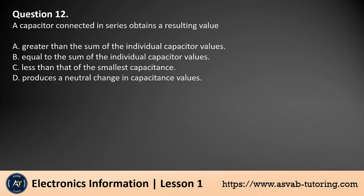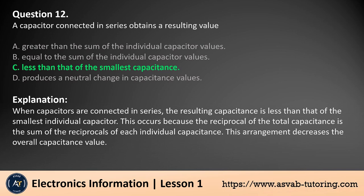Question 12. A capacitor connected in series obtains a resulting value: a. Greater than the sum of the individual capacitor values, b. Equal to the sum of the individual capacitor values, c. Less than that of the smallest capacitance, d. Produces a neutral change in capacitance values. The answer is c. When capacitors are connected in series, the resulting capacitance is less than that of the smallest individual capacitor. This occurs because the reciprocal of the total capacitance is the sum of the reciprocals of each individual capacitance, decreasing the overall capacitance value.